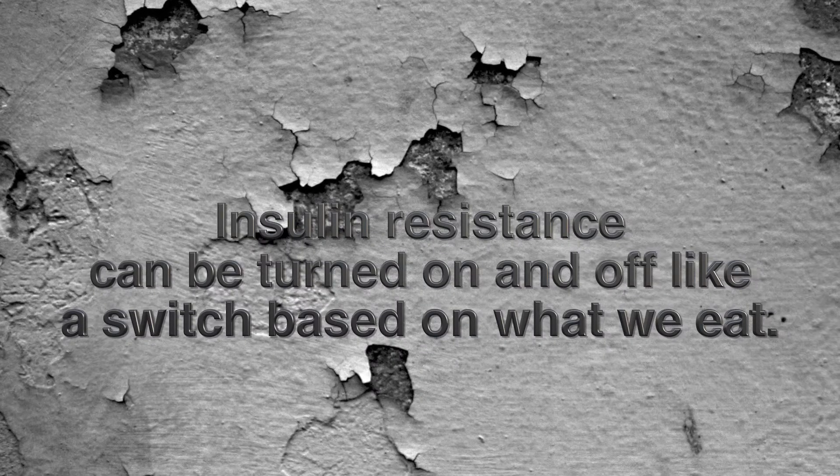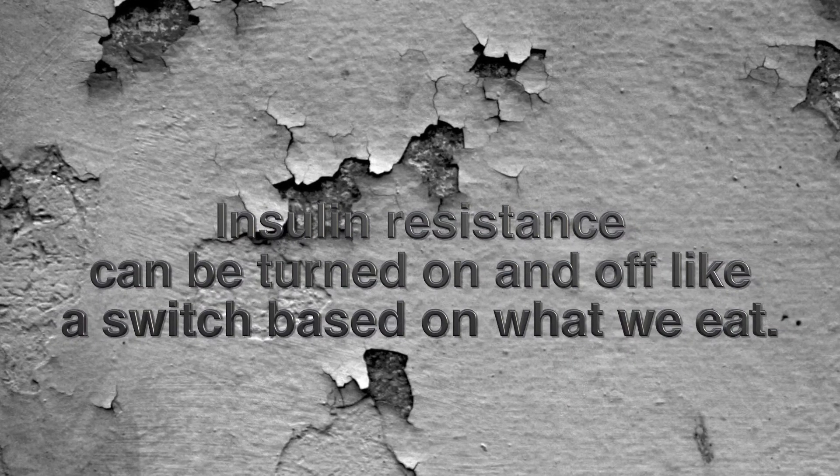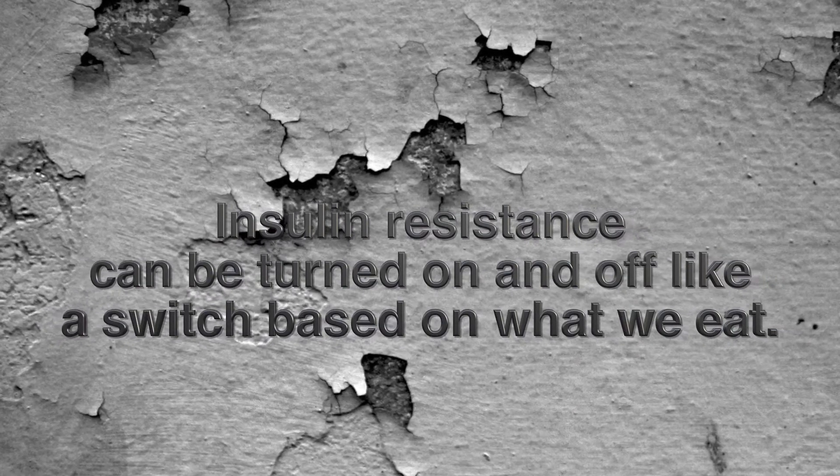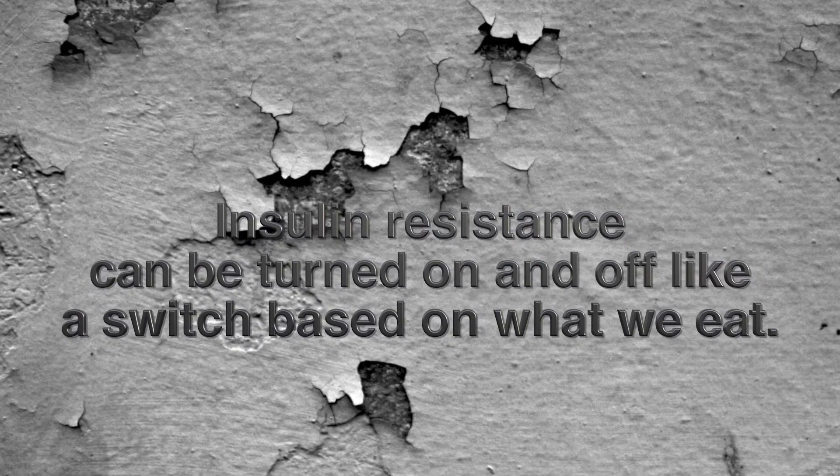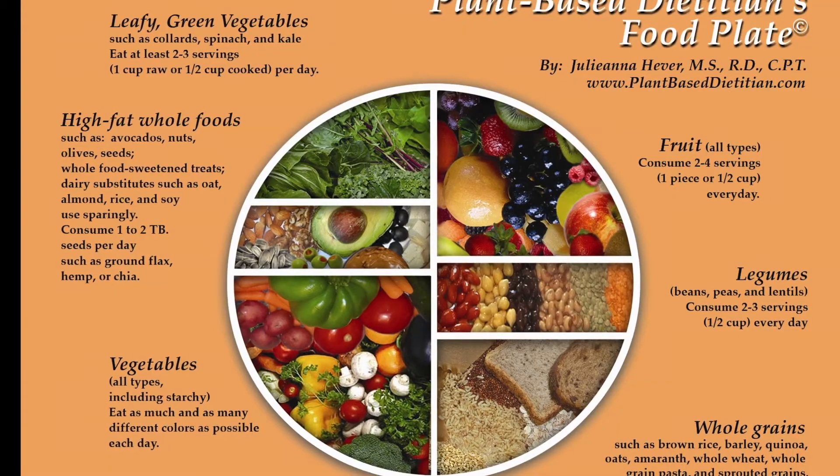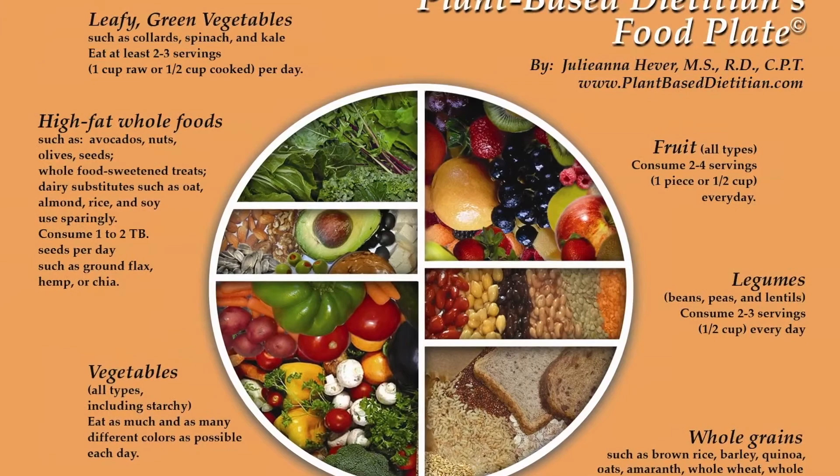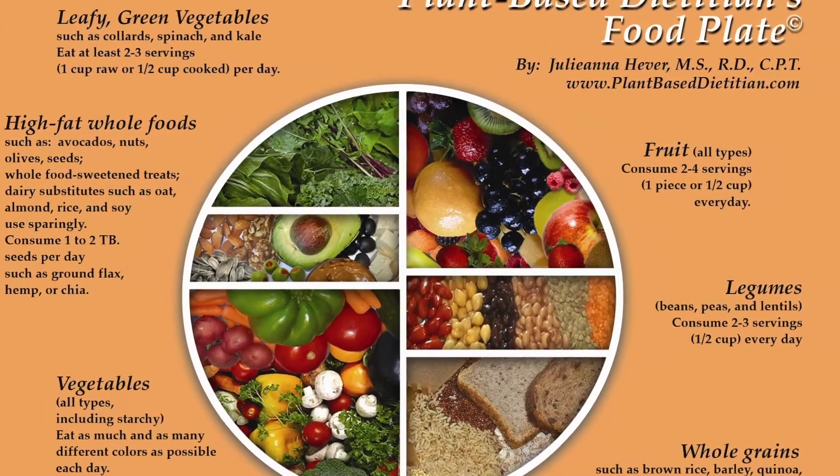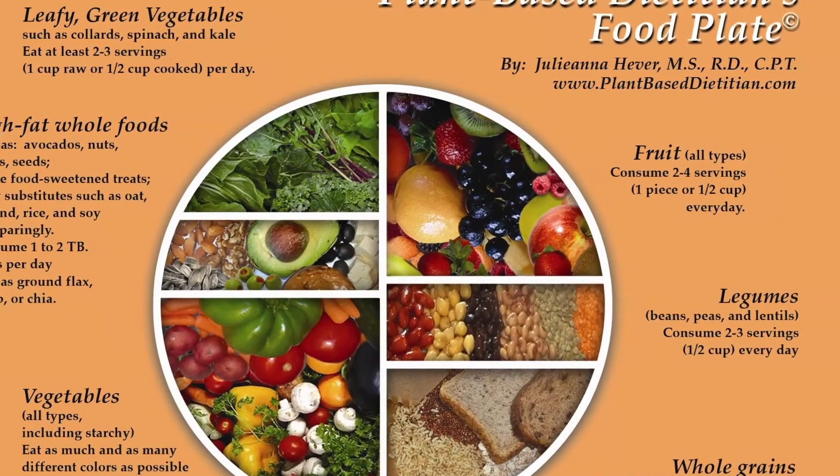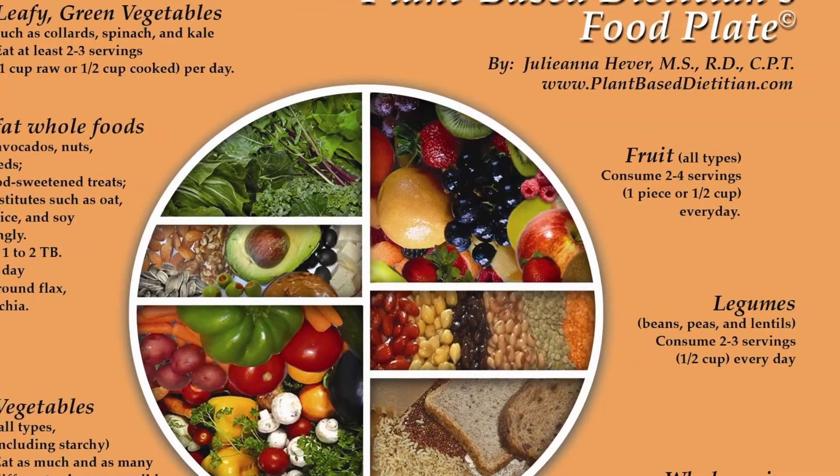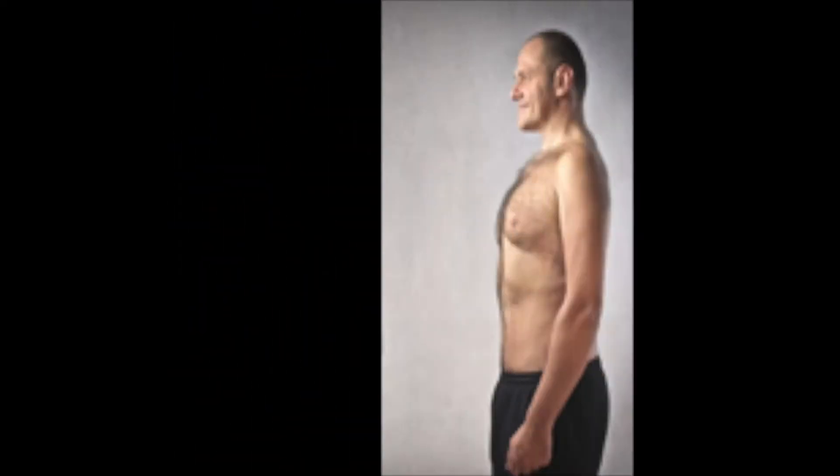Insulin resistance can actually be turned off and on, like a switch, just based on what we eat. If we eat a very low-fat, whole foods, plant-based diet, it's going to be very low on free fatty acids. It's going to be very high in fiber and low on refined carbohydrates. This will lead to reversal of insulin resistance.